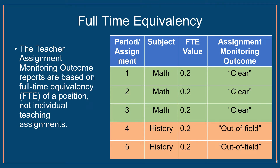As you can see in this example, a single teacher can be clear for part of their assignment and out of field for part of their assignment. In this case, this teacher has the appropriate math credential to be clear for 0.6 of their assignment, and does not have the appropriate credential for history and is considered out of field for 0.4 of their assignment when teaching these history courses. This means that if you note that you have 1.0 FTE that are out of field, this does not necessarily represent one full-time teacher — it could represent a portion of several more teachers' assignments. More information about FTE can be found in the video Full-time Equivalency vs. Individual Teacher Counts on the same site as this video.